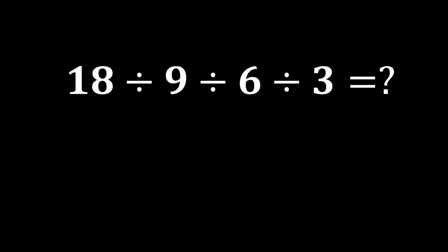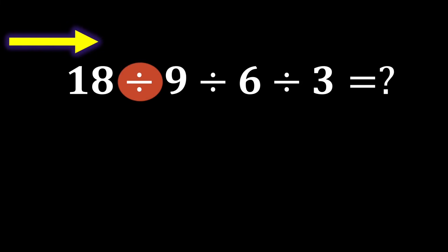In this expression, there is more than one division, and since all of these divisions have equal priority, we must move from left to right and perform all the divisions in order. Therefore, we first perform this division, then this division, and finally this division.